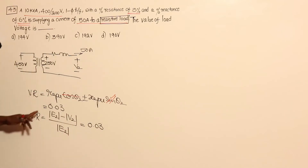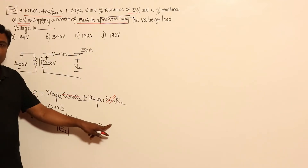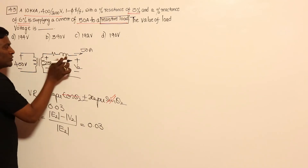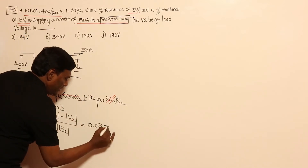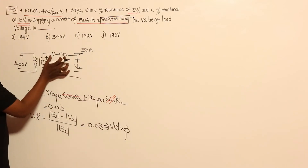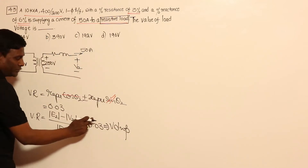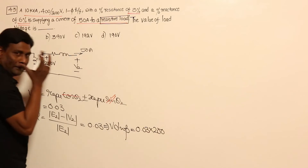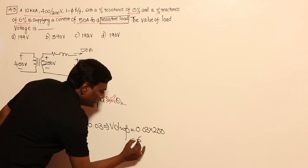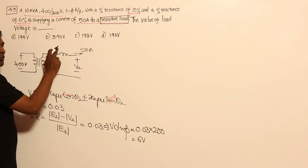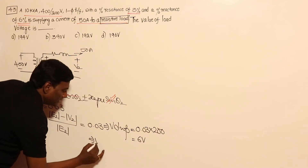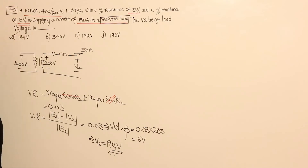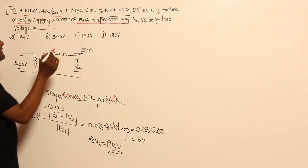So voltage regulation = (E2 − V2) / E2 = 0.03, meaning the voltage drop E2 − V2 = 0.03 × E2 = 0.03 × 200 = 6 volts. Therefore V2 = 200 − 6 = 194 volts. So V2 = 194 volts, which is the correct answer. But now let me explain the flaw in this approach.